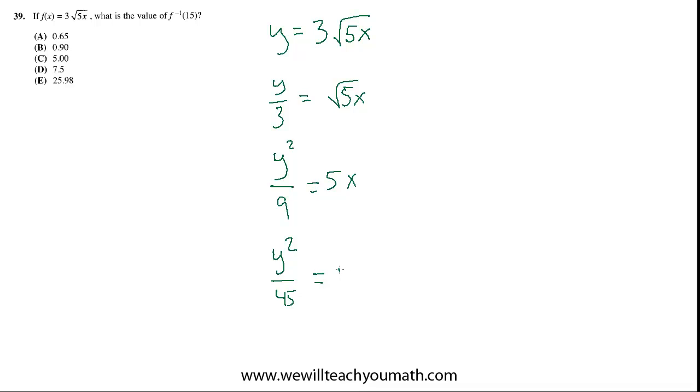So we'll get y squared over 45 equals x, and then at the very end, we interchange the variables. So we say y equals x squared over 45 instead. And that is the inverse function of what we started with.